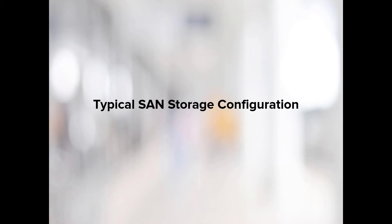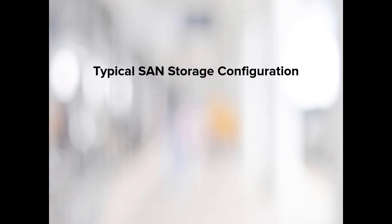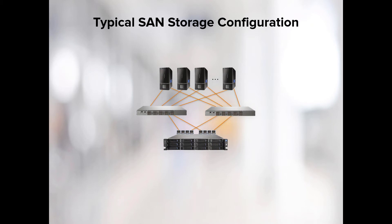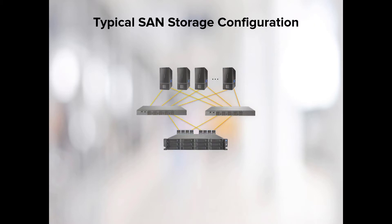A typical SAN storage configuration contains a number of hosts that are provisioned with storage LUNs from storage arrays through fiber channel switches in a redundant manner. There are usually multiple clients, each with at least two initiator ports, two or more switches, single layer or core edge, and a storage array with multiple controllers and target ports. Each host connects to the storage over redundant paths using a multipath driver so there is no single point of failure.